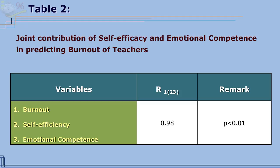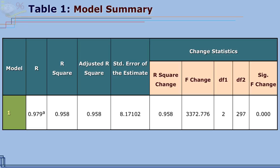The title of Table 2 is: joint contribution of self-efficacy and emotional competence in predicting burnout of teachers. From Table 2, it is evident that the multiple correlation coefficient is 0.98, which is significant at the 0.01 level with df equal to 2/297.